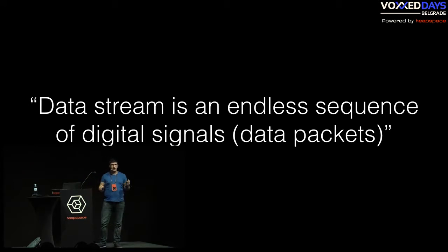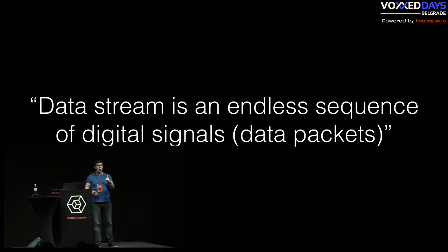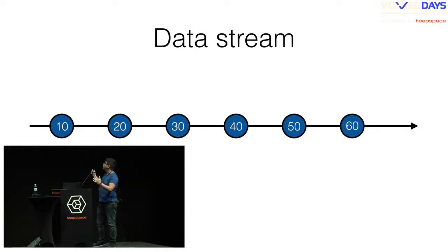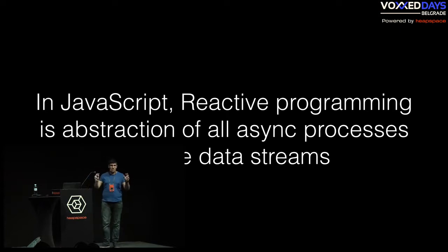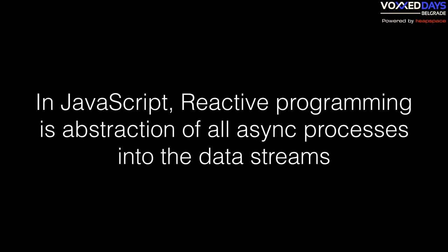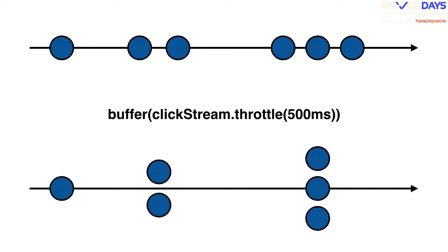A data stream is an endless sequence of digital signals, or in our case, data packets. Imagine you have an endless sequence of some data that's coming into your app, going through the app, and going outside. This is a picture of data streams — we have packets of data or buffers with numbers like 10, 20, 30, and so on. That data is endless. So reactive programming in JavaScript is an abstraction of all async processes into data streams.